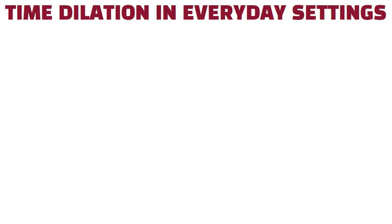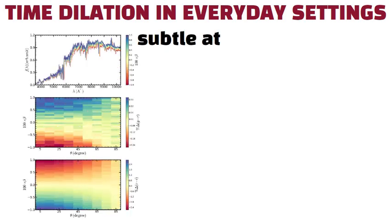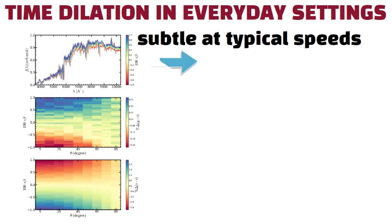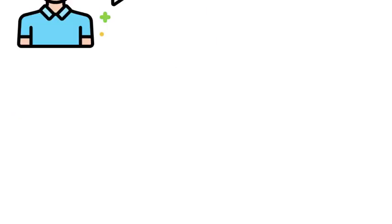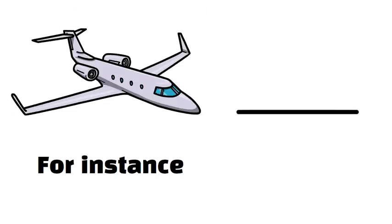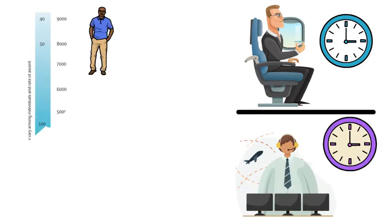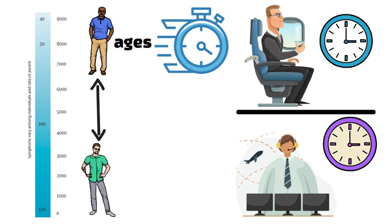Time dilation in everyday settings. Even though relativistic effects are subtle at typical speeds, there are ways they can pop up in daily scenarios. Airplane flights, for instance, introduce small differences in clock readings between passengers and ground controllers. A person living at a high altitude technically ages a bit faster than someone at sea level.